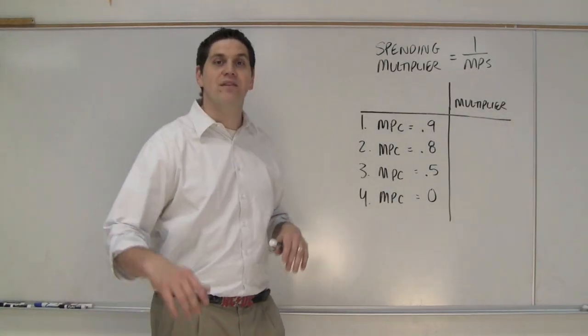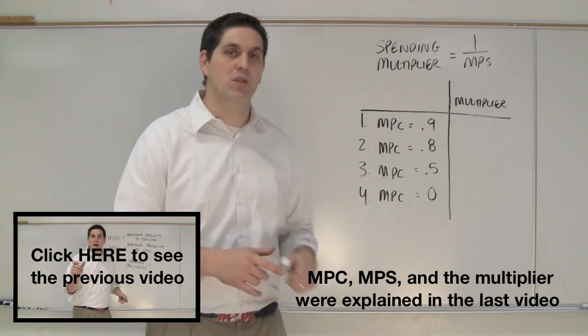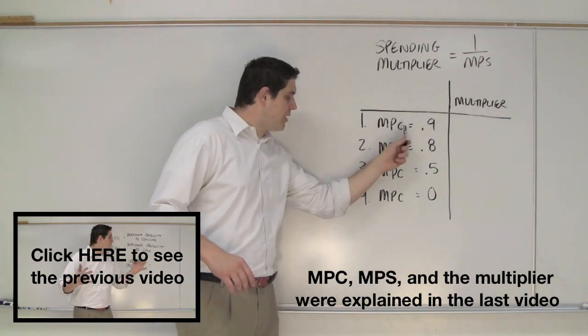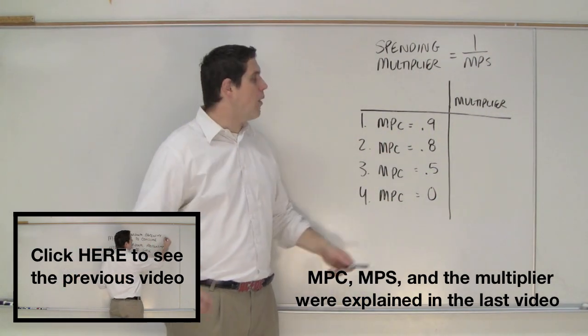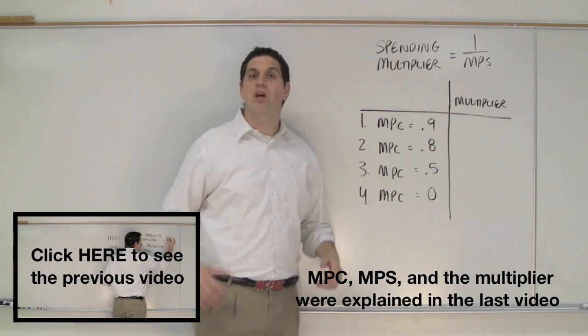Hey! How are you doing AP Econ students? It's Mr. Clifford. It's time for some quick practice on the spending multiplier. What I have for you is the marginal propensity to consume under four different scenarios. I want you to calculate the spending multiplier so you understand this concept.